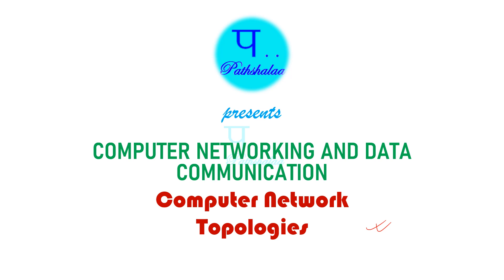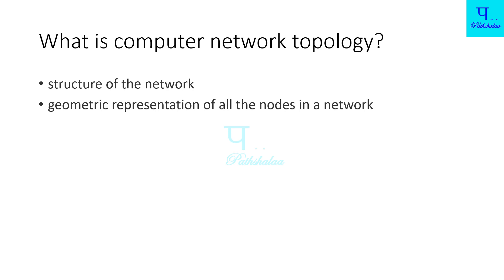First of all, we are going to look at Computer Network Topologies — this is Unit 1. What is Computer Network Topology? The structure of your network is what we talk about when we say Topology. Or you can say it is the geographical or geometrical representation of all nodes in a network. It is called Computer Network Topology. If there is any network, there are devices and there are nodes. The devices are connected to those nodes — that arrangement is called Network Topology.